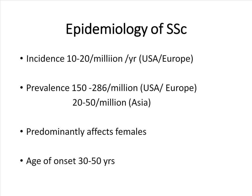There is an incidence of 10 to 20 per million per year for systemic sclerosis, and a prevalence of 150 to 286 per million in Western populations, and between 20 to 50 per million in Asia. It predominantly affects females, with an age of onset between 30 to 50 years.